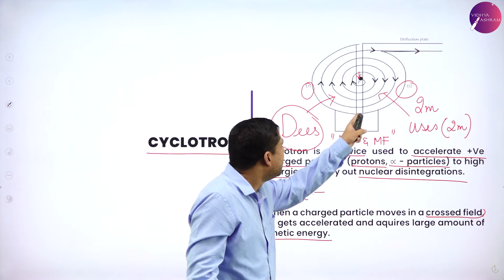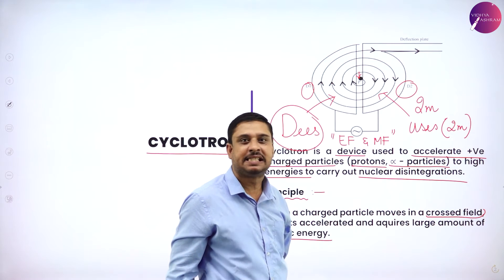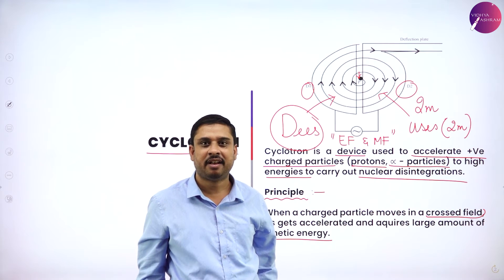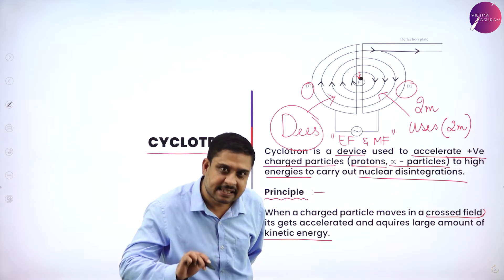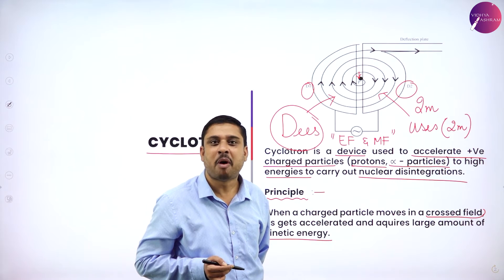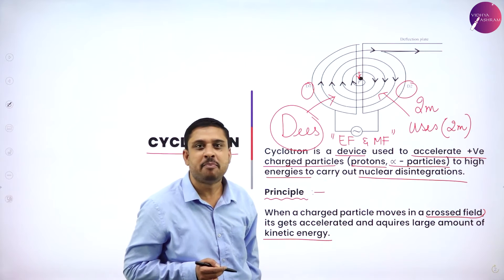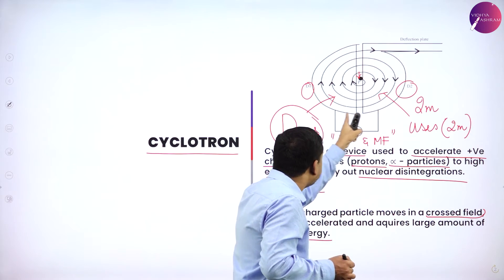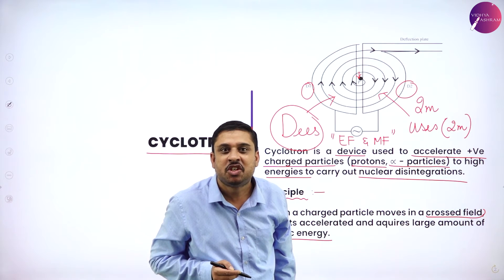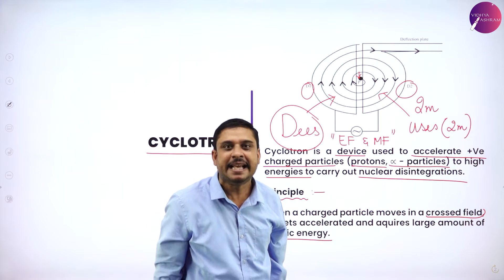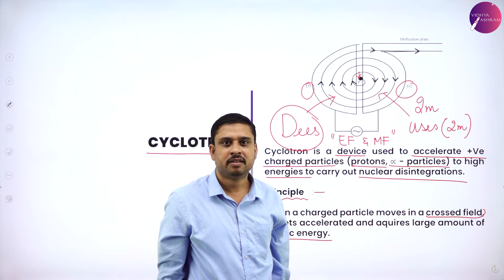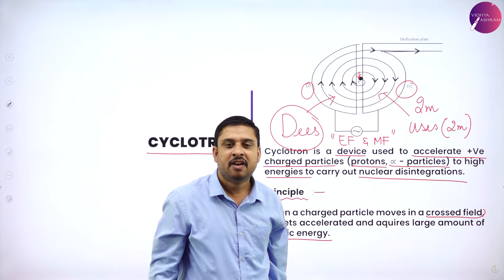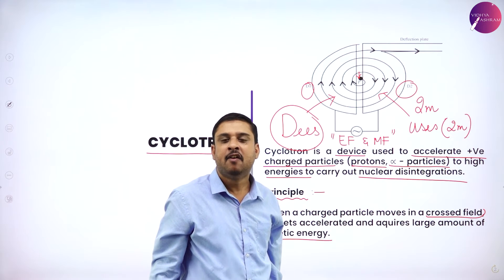The charged particle moving in the semi-circular D's will experience a centripetal acceleration, and the electric field provides the necessary potential for the charged particle to speed up. The magnetic field makes the charged particle move in a circular path — it changes the direction of the charged particle within the D's. So the electric field speeds up the charged particle within the D's, and the magnetic field changes the direction of the charged particle within the D's.